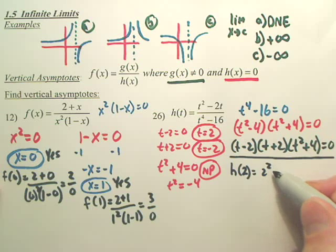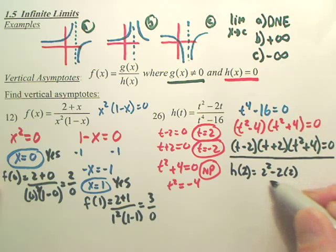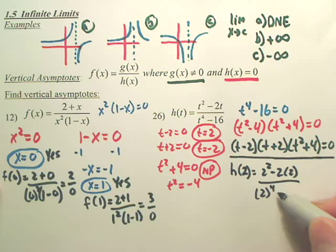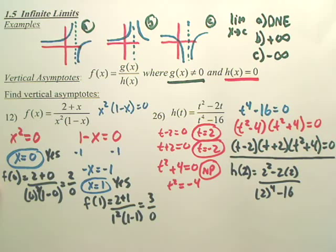equals two squared minus two times two over two to the fourth minus sixteen. What's it look like we're getting? Is that zero over zero? Uh-oh. Is that a vertical asymptote? No.